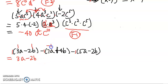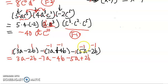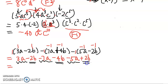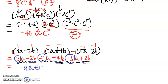Distributing 1 gives 3a minus 2b unchanged. Distributing negative 1 changes the signs: negative 1 times 7 is negative 7, negative 1 times positive 4 is negative 4. And distributing another negative 1 gives negative 5a plus 2b, because negative times negative is positive. Next, we find all like terms: 3a, negative 7a, negative 5a, and negative 2b, negative 4b, positive 2b. Combining the a terms: 3 minus 7 minus 5 is negative 9. Combining the b terms: negative 2 minus 4 plus 2 is negative 4. Final answer: negative 9a minus 4b.